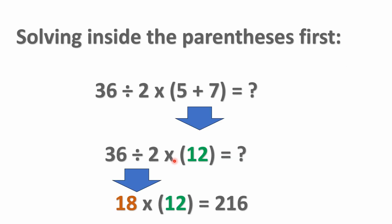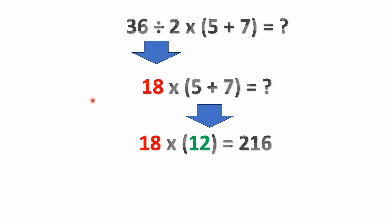I could have gone ahead and solved inside the parentheses first. I could have said 5 plus 7 is 12, then 36 divided by 2 is 18, and 18 times 12 is 216 — you get the same answer that way. The thing is, when I divided, that had no impact on what was in parentheses whatsoever. It's not like I went through and said 36 divided by 2, then 2 times 5 is 10, and then add 7 — that would be incorrect. That's going against the order of operations.